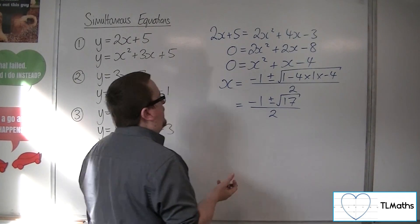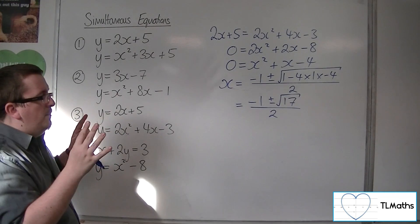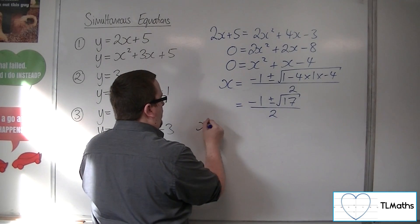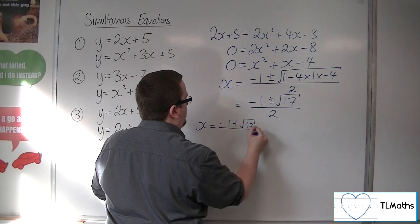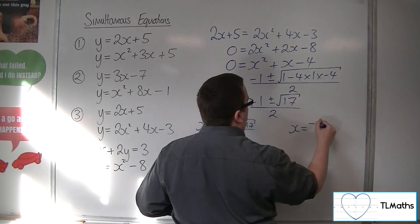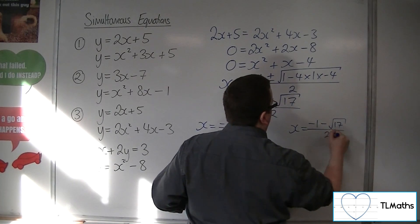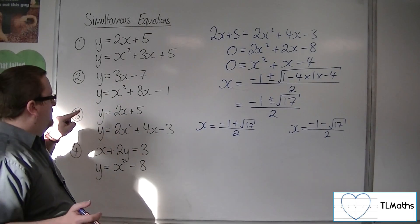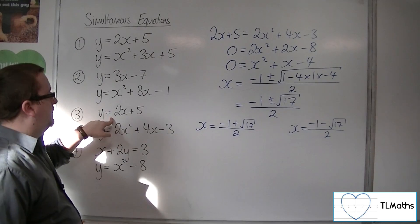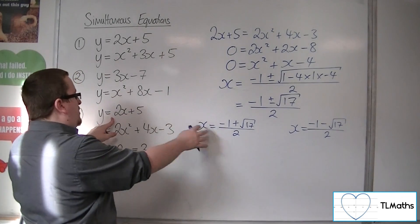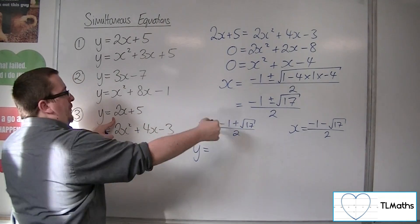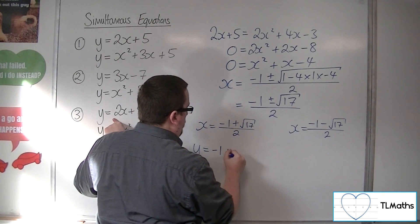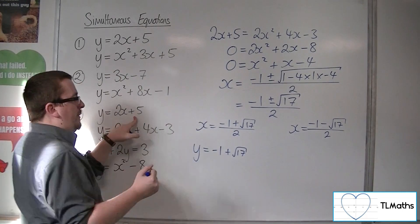So we've got x equals (minus 1 plus root 17) over 2, and x equals (minus 1 minus root 17) over 2. To find the y coordinates, we substitute these into the first equation, which is clearly the easiest. Substituting into 2x plus 5: 2 lots of that will cancel the 2 in the denominator, giving minus 1 plus root 17, and we still have the plus 5.